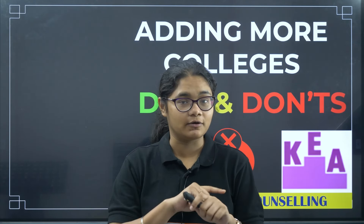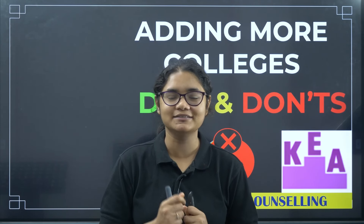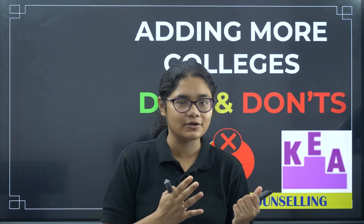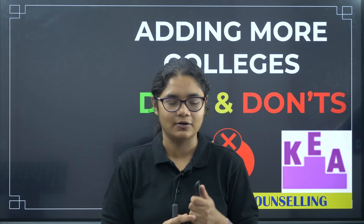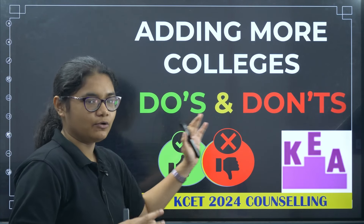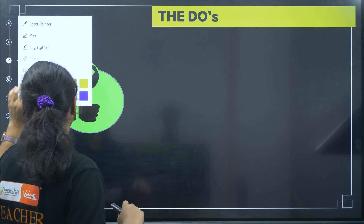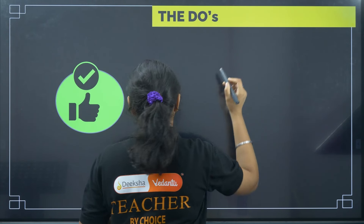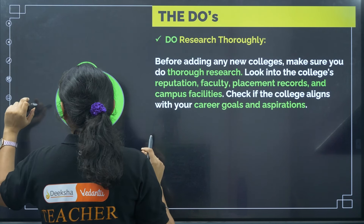Please watch the complete video and note down these important points so that the next time you are editing or adding colleges to your option entry, you will definitely consider them. Now let us look at the do's first, then we will check the don'ts. The first do you must consider is: do proper research on the colleges.